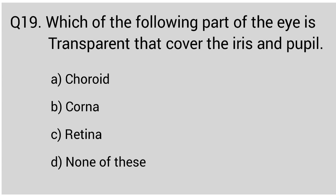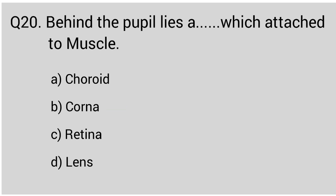Question number nineteen: which part of the eye is transparent and covers the iris and pupil? The correct answer is option B, cornea. Question number twenty: behind the pupil lies a lens which attaches to muscle. The correct answer is option D, lens.